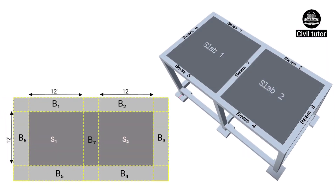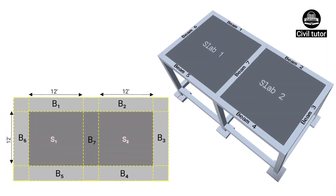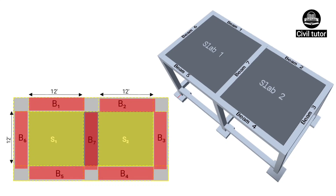Consider a slab beam system with the given dimensions. As you can clearly visualize from the picture, we have a structure in which we need to cast two slabs, S1 and S2, and seven beams numbered from B1 to B7.